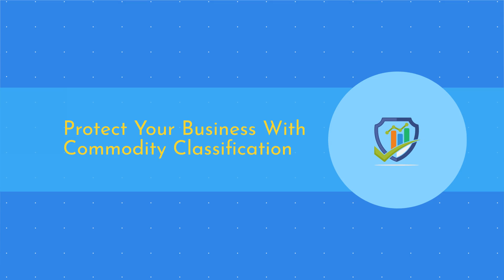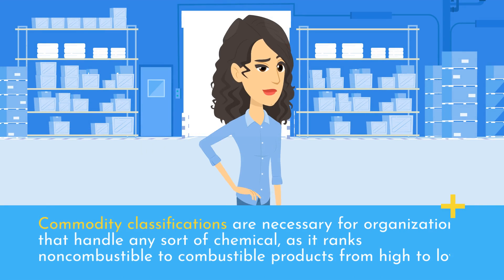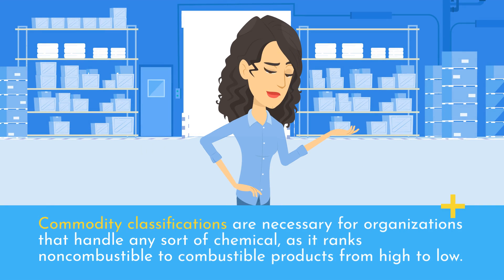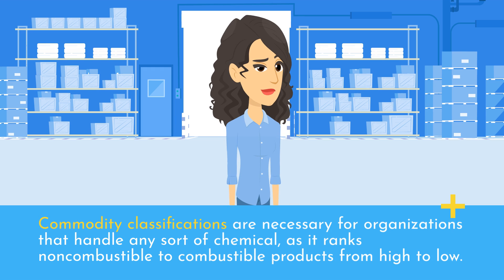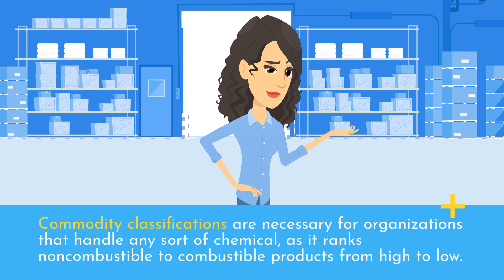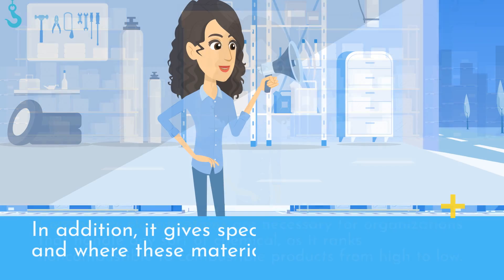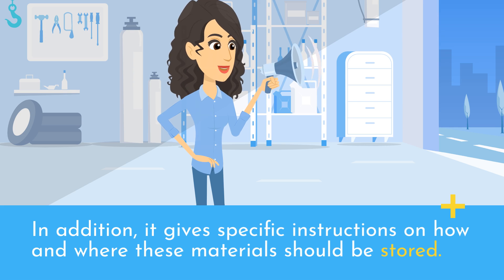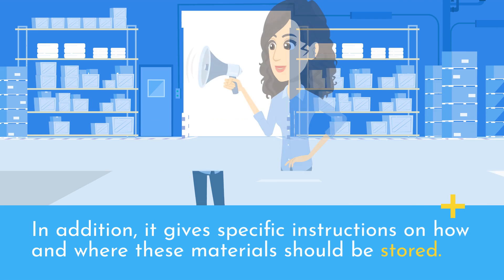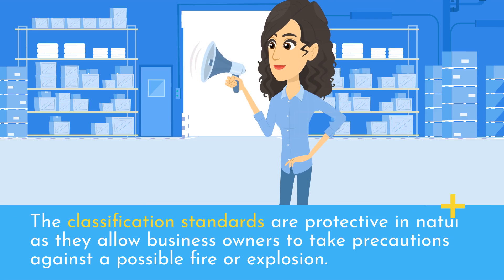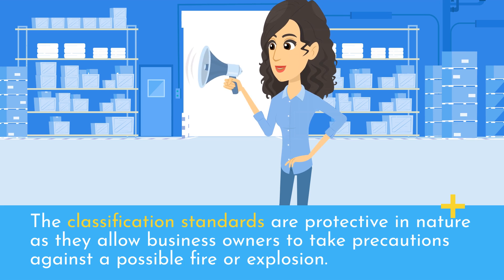Protect your business with Commodity Classification. Commodity classifications are necessary for organizations that handle any sort of chemical, as it ranks non-combustible to combustible products from high to low. In addition, it gives specific instructions on how and where these materials should be stored. The classification standards are protective in nature as they allow business owners to take precautions against a possible fire or explosion.